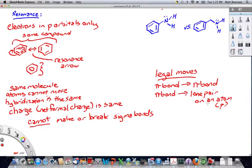Or, you can take a lone pair, provided it's in a p orbital, and make it into a pi bond. These are the only three things you can do when predicting resonance structures.